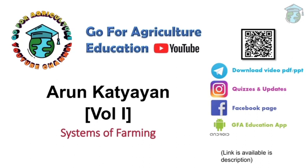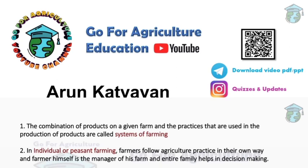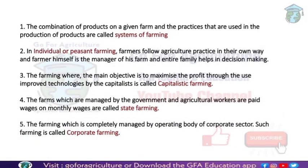Systems of farming refers to who will take the chance to grow the crops — is it the government, an individual farmer, a corporate body, or two or more farmers together? The combination of products on a given farm and the practices used in the production of those products are called systems of farming. Basically, systems of farming means the methods and strategies used in farm management to produce a farming product.